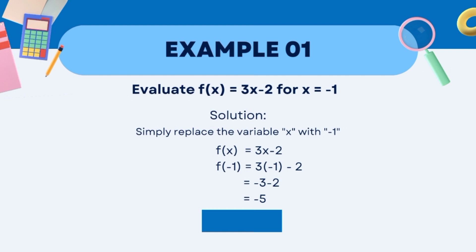Now solve. We have 3 times negative 1 minus 2. 3 times negative 1 equals negative 3, bring down negative 2. Negative 3 minus 2 equals negative 5. Therefore, f(−1) = −5.